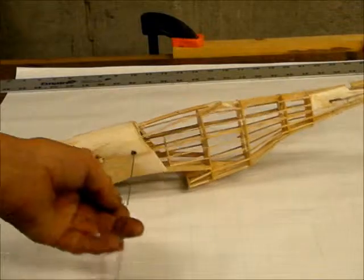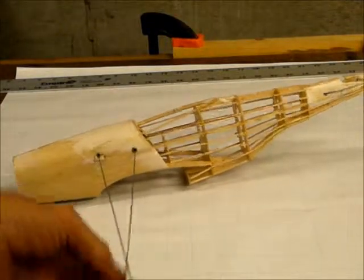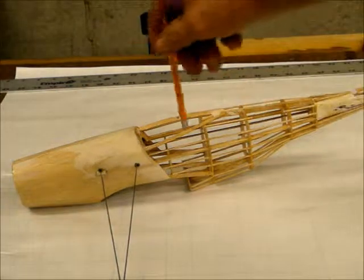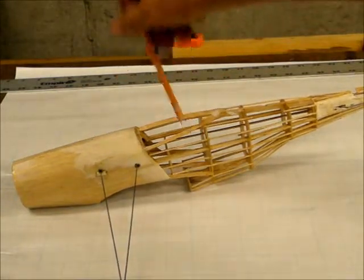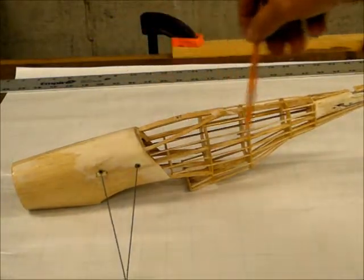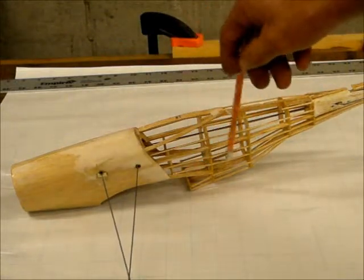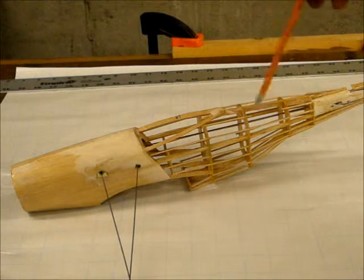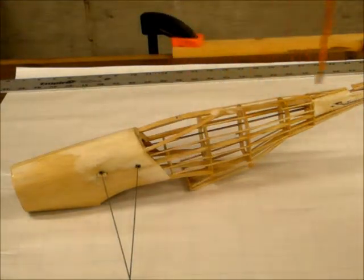Now this is set up for a control liner. That's why the wires are hanging out of it. You can see inside the formers and then these pieces of strips of wood here, they call them stringers. I think the correct terminology is longerons. That creates the basic shape of the body.